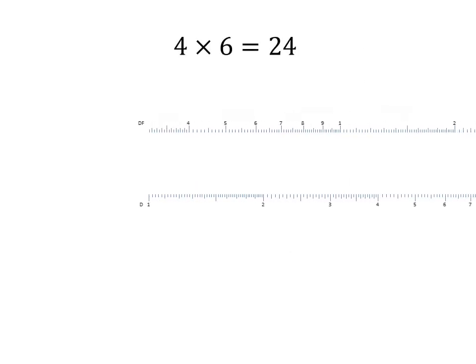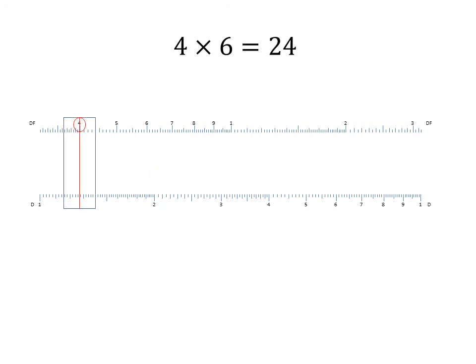The F in the CF and DF scales stands for folded. These folded scales are offset from the C and D scales by the value of pi. Reading from the D scale to the DF scale has the effect of multiplying by pi. But that is not the only purpose — having scales that are offset means you can save time and improve accuracy by not having to move the slide around as much. For example, to multiply 4 times 6, instead of using the right index of the C scale, you can use the index of the CF scale.